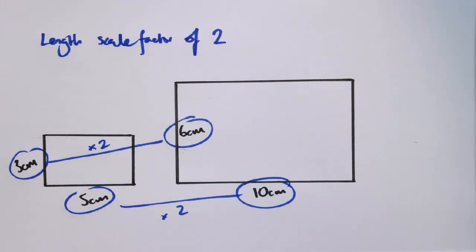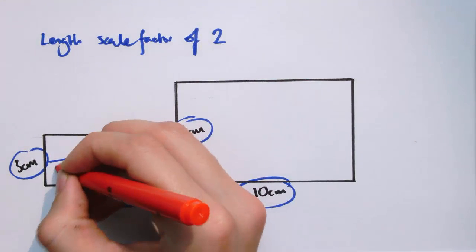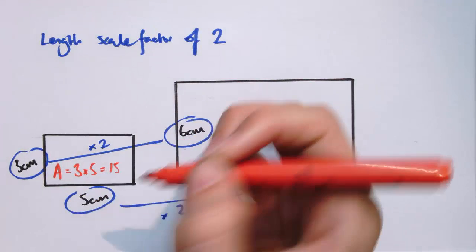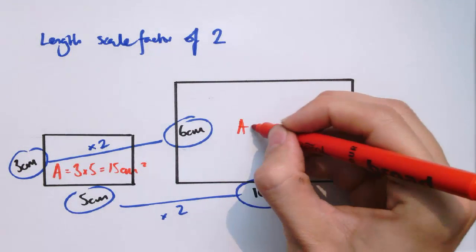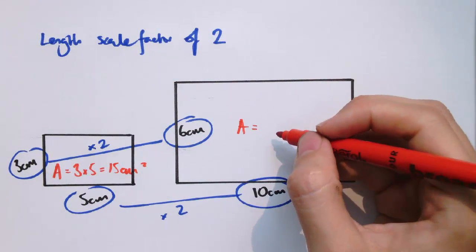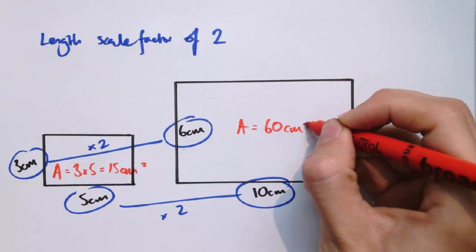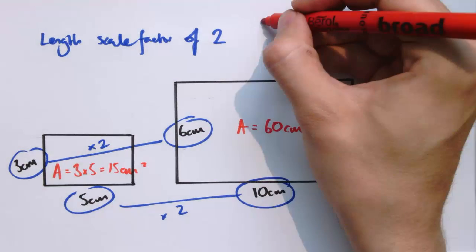In exactly the same way. Now what we want to look at is how this relates to an area scale factor. So the area of this smaller rectangle is 3 times 5, which is 15 cm squared, and the area of this larger rectangle is 6 times 10, which is 60 cm squared.